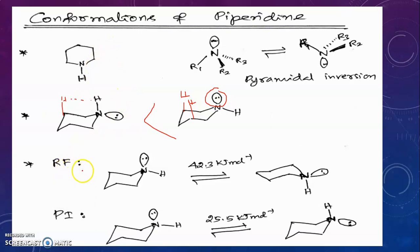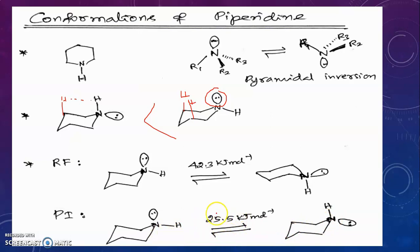Ring flipping also occurs in piperidine. The energy barrier for ring flipping is 42.3 kJ/mol. Pyramidal inversion is also possible in piperidine; it converts axial hydrogen to equatorial and vice versa. The energy barrier for pyramidal inversion is 25.5 kJ/mol. Since the energy barrier for pyramidal inversion is lower, pyramidal inversion occurs faster than ring flipping.